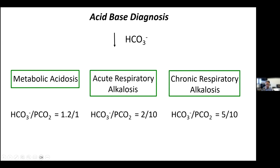Everything above 16 or 17, you can't distinguish based on the bicarbonate value alone. So you look at the PCO2 change and calculate the change in bicarbonate from its original level versus the change in PCO2. These ratios are very different in each of the three disorders.